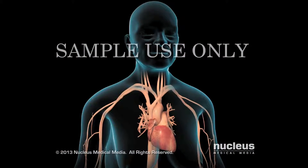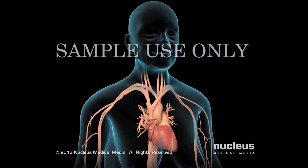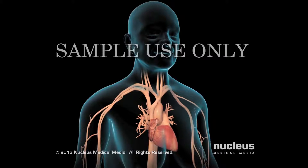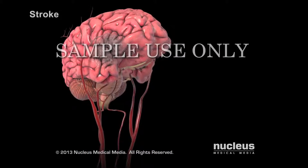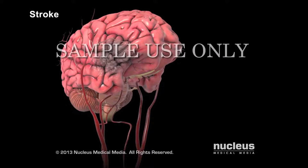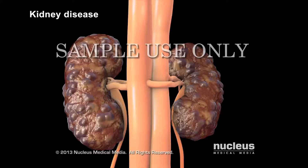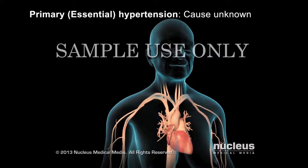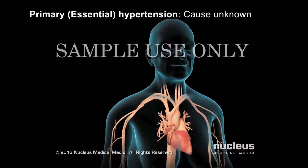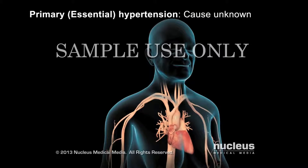Damage to your arteries raises your blood pressure even more by making your heart beat more forcefully. Artery damage and reduced blood flow lead to conditions such as a stroke, heart attack, or kidney disease. In most cases, the cause of high blood pressure, or hypertension, is unknown. This type of high blood pressure is called primary, or essential, hypertension.